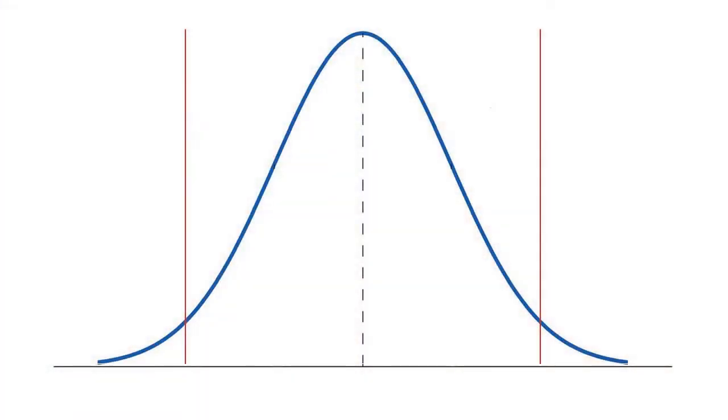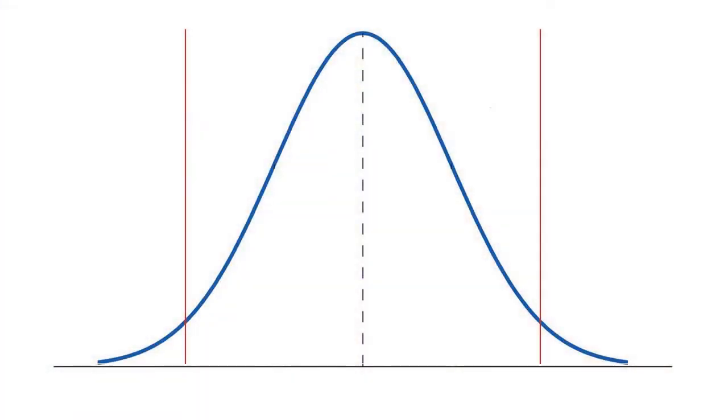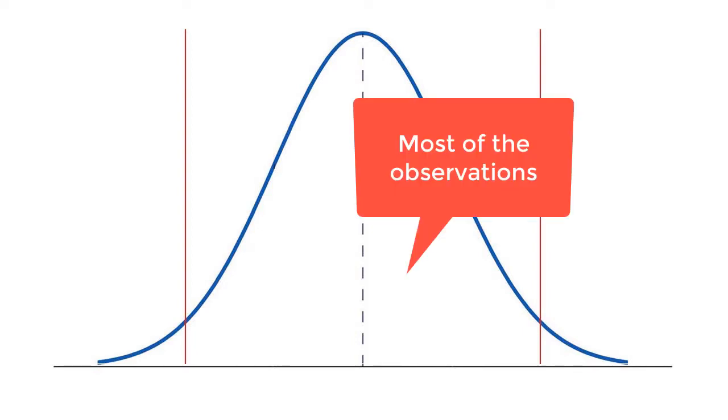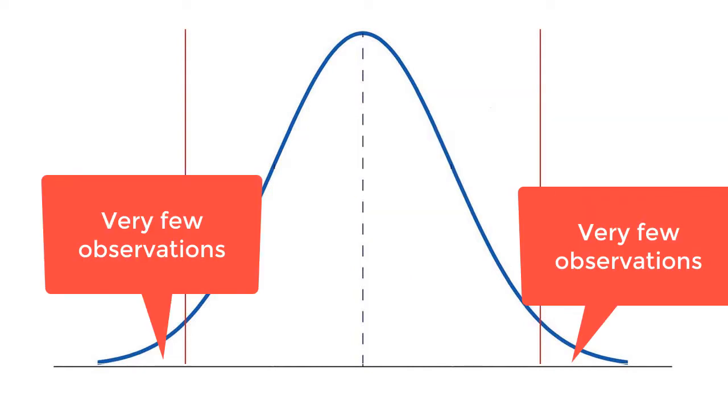For example, we can frequently see people checking the normality of individual variables. However, this assumption refers to the multivariate normality of the variables. Simply speaking, normally distributed data has a bell-shaped histogram where most of the observations are concentrated in the center while very few observations are located in the two tails.